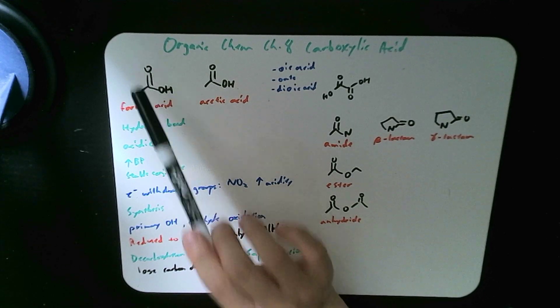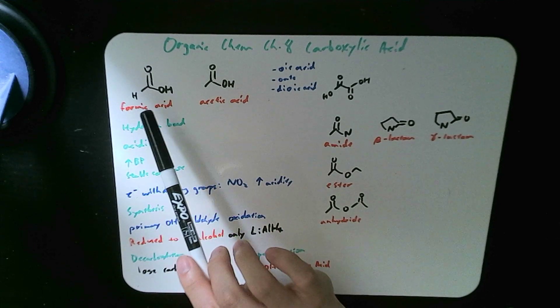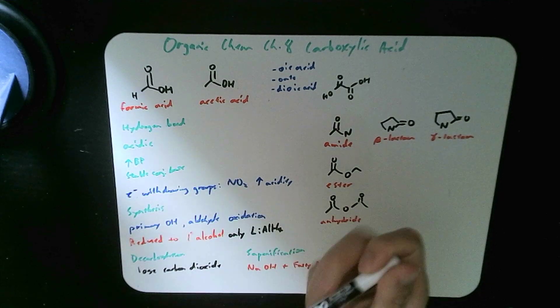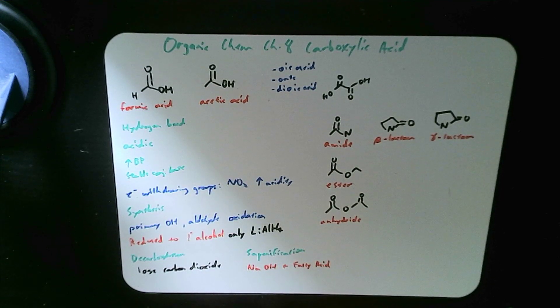One carbon, carbon oxygen and OH. So methanoic acid, also known as formic acid. Formic for ant because that's what is commonly found in ant.